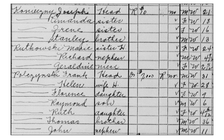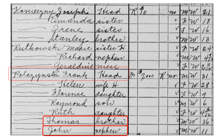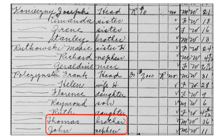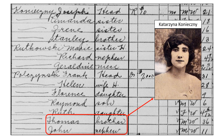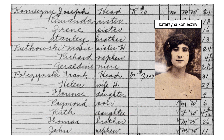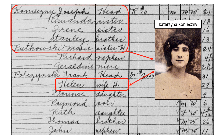The census record shows my dad, John, living with his dad, Tom, who was living with his brother, Frank. Who we don't see is John's mother and Tom's wife, Katarzyna Konieczny, because she died in 1927. But what we do see is that also living in the same house were several of Katarzyna's brothers and sisters, which gives a bit more of a picture of the family.